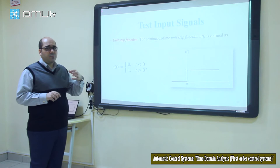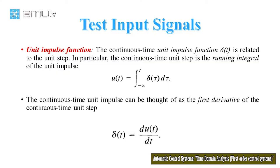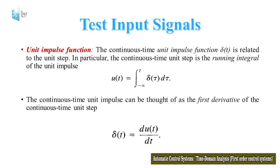The second one is the unit impulse function. The unit impulse function is related to the unit step function. Using this formula, we can find that u(t), our step function, is equal to the integral of delta(tau) d-tau. This delta is our impulse function, and we can say that delta(t), the continuous time unit impulse, is the first derivative of the continuous time unit step.